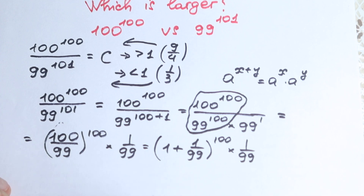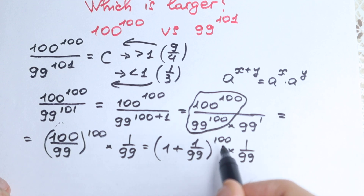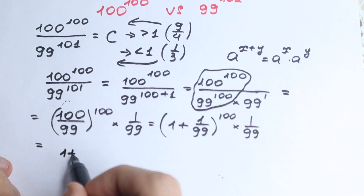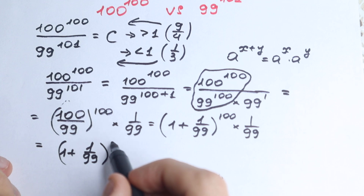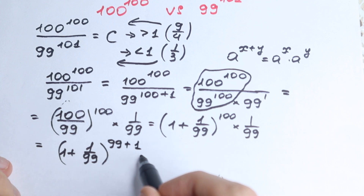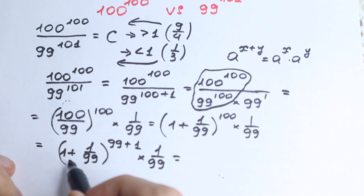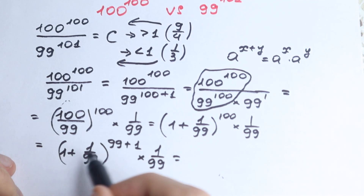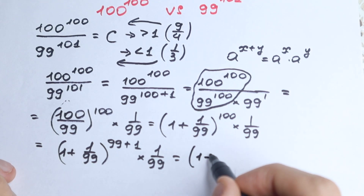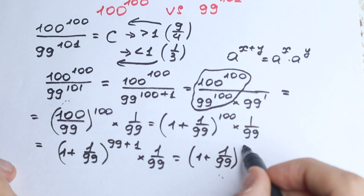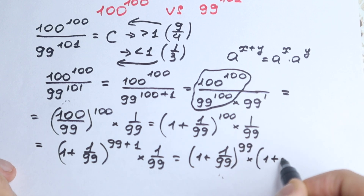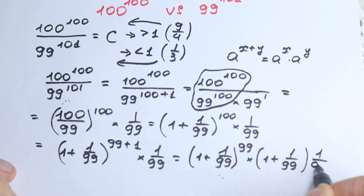Right now I want to show a really interesting trick: since we want to match the power 99, let's write the exponent 100 as 99 plus 1. So we have (1 plus 1 over 99) to the power (99 plus 1), times 1 over 99. Applying the same exponent rule again, this becomes (1 plus 1 over 99) to the power 99, times (1 plus 1 over 99), times 1 over 99. So we have three expressions.